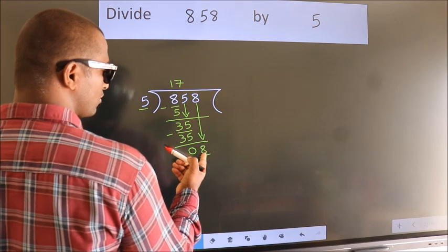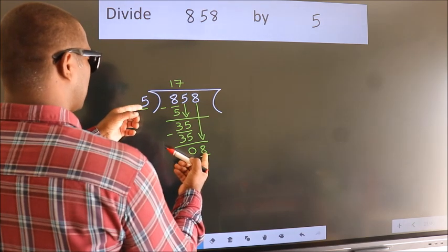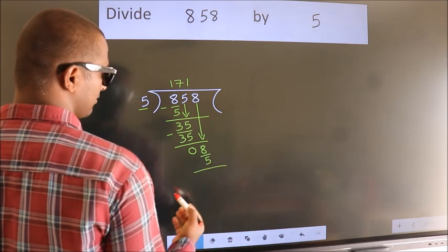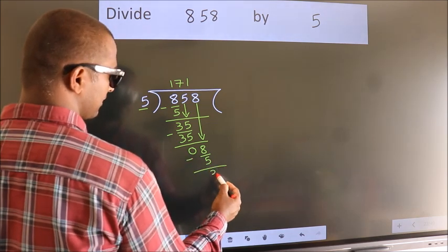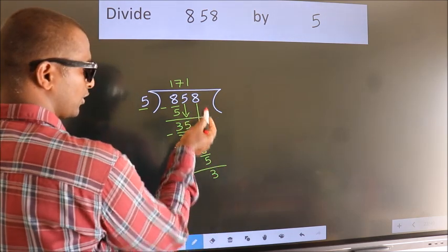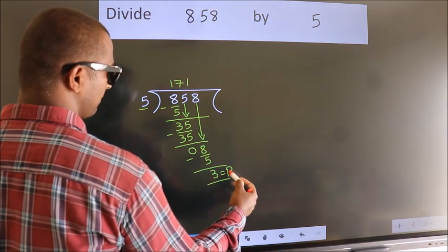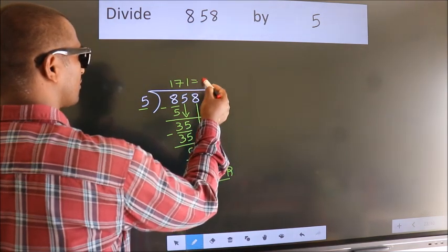A number close to 8 in 5 table is 5 once 5. Now we subtract. We get 3. No more numbers to bring down, so we stop here. This is our remainder. This is our quotient.